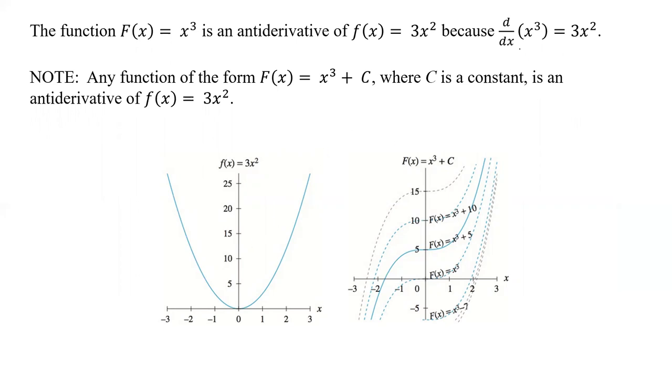So what happens is, if we take d/dx of x cubed, what we get is we bring down a 3, subtract 1, so we get 3x squared. So basically, when we take the derivative of this, we get this, and then if we take the integral of this, we get this. So that's kind of what we're doing. We're going back and forth between taking derivatives and taking the anti-derivative or the integral.